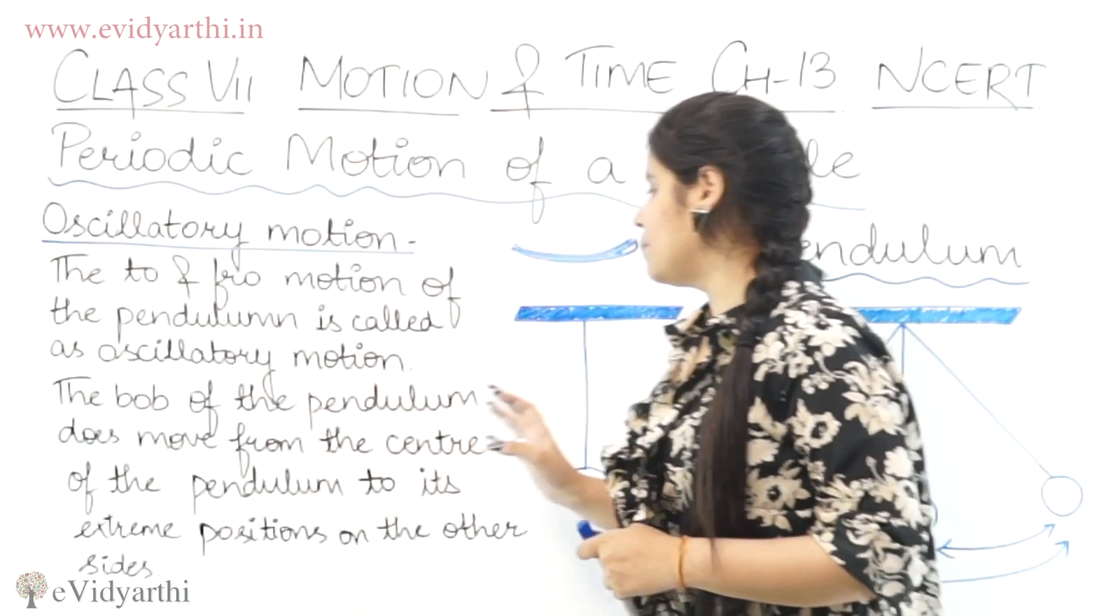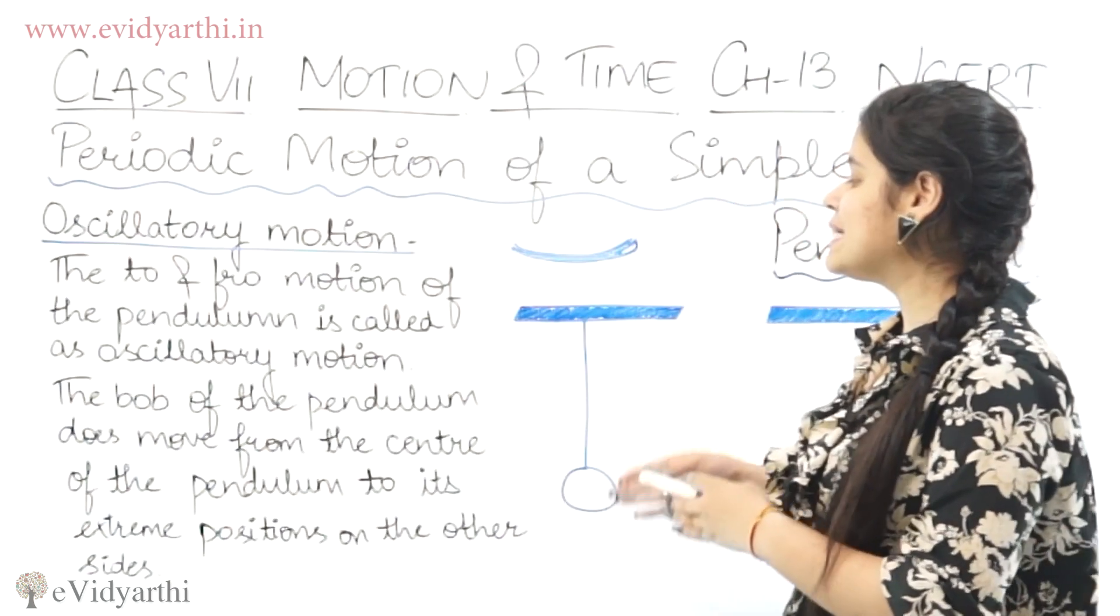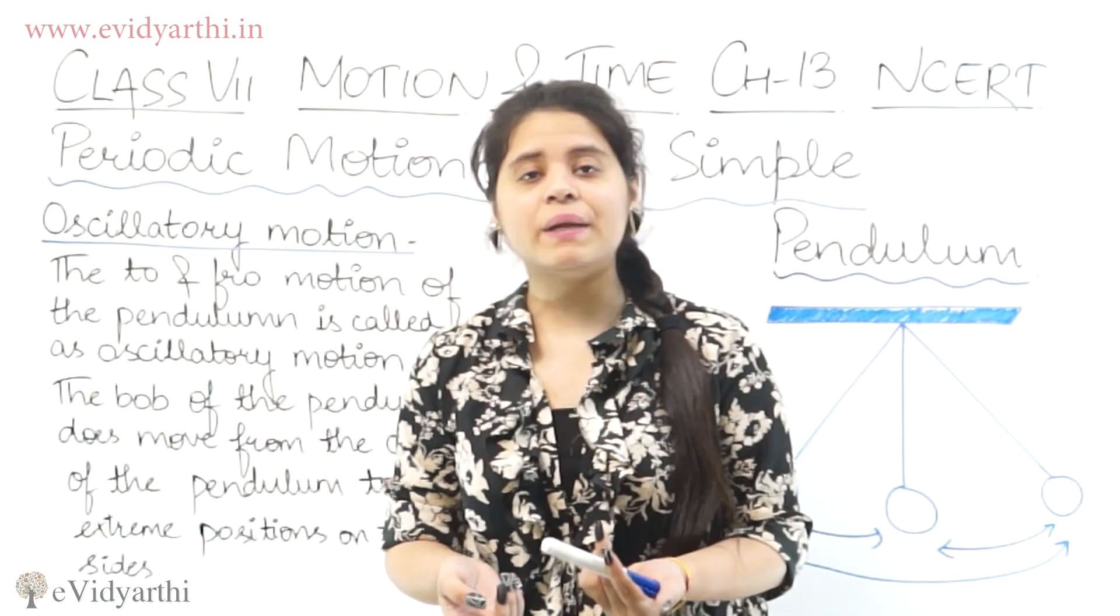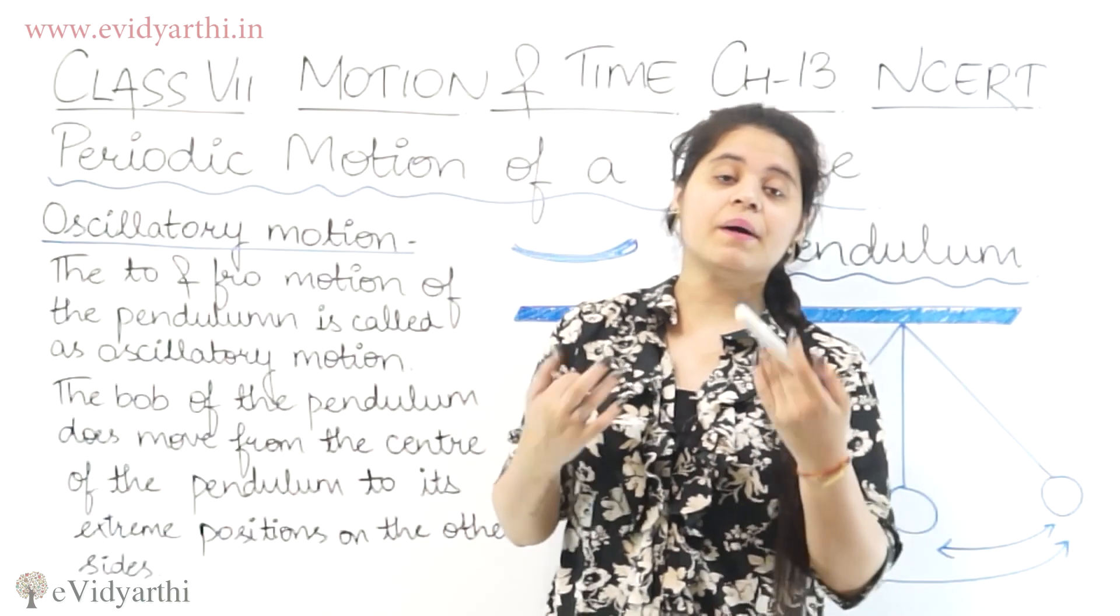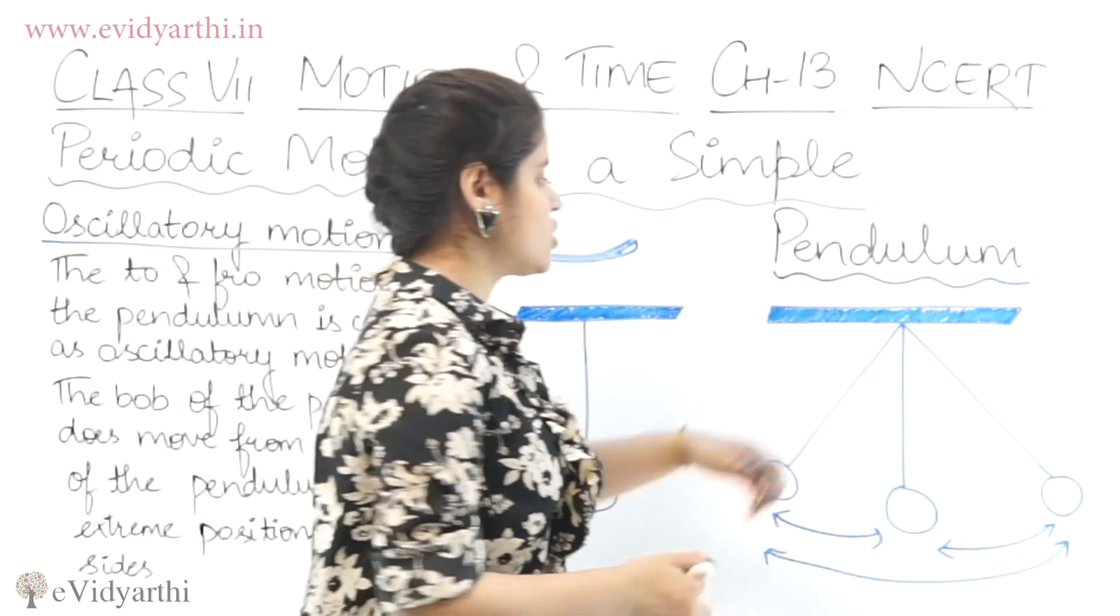Then the bob of the pendulum does move from the center of the pendulum to its extreme positions on the other side. Now we have movement explained. When you explain, you should be able to write it. What is mean position?